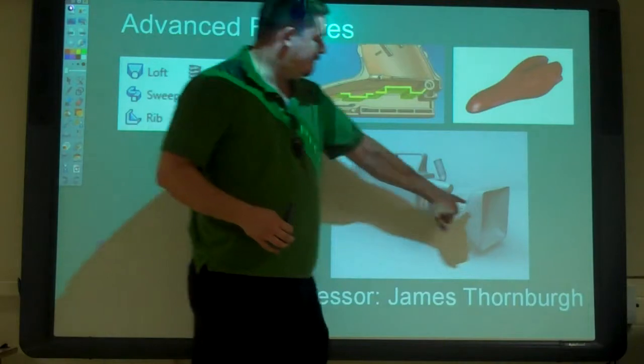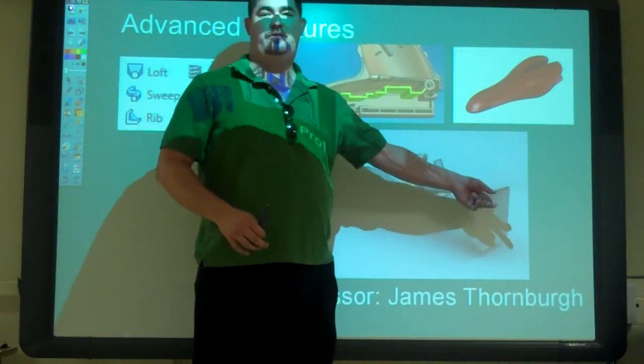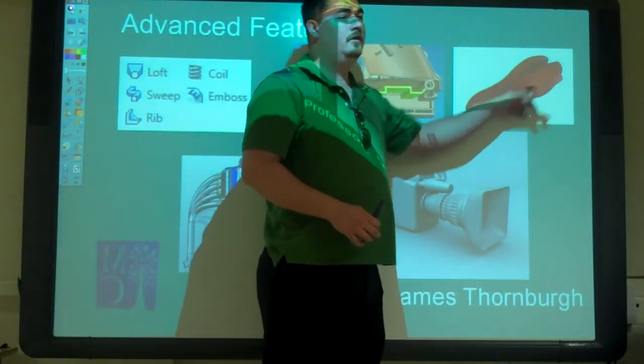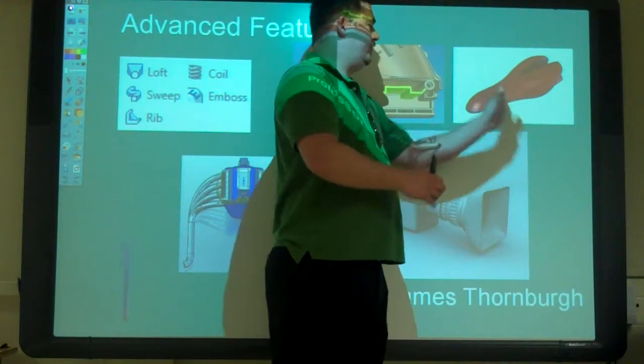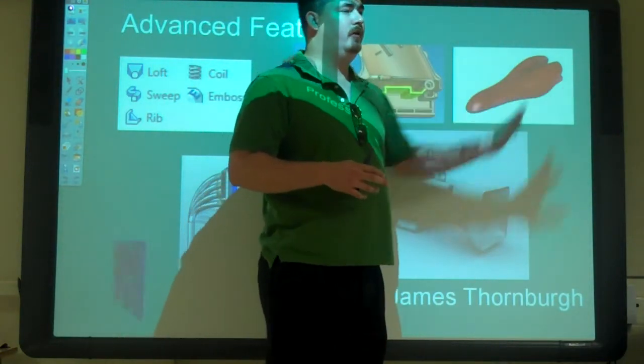So like on this camera lens, or the housing here, it starts out a circle and ends up a square. So it is a loft. Same thing with the seat. Going from one shape and different cross sections it has a different profile. So going smoothly between all of those.